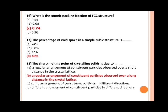Next, the percentage of void space in a simple cubic structure is dash. Options are: a) 74%, b) 68%, c) 32%, d) 48%. Now, as we all know that the packing in simple cubic structure is 52%. Therefore, void space equals 100 minus 52 equals 48. So the correct answer is d, 48%.